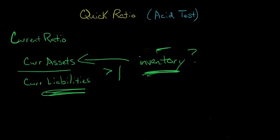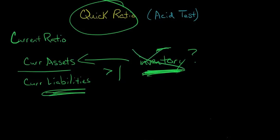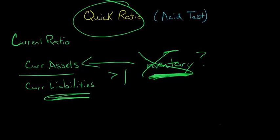And that's why we need a quick ratio, or otherwise known as the acid test ratio. Basically, what we're doing is addressing this issue by just excluding inventory from the computation of current assets and computing a new ratio.